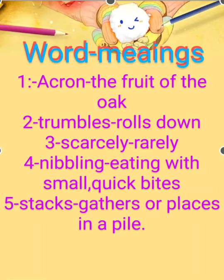First we will do some word meanings. First one is 'acorn' — the fruit of the oak. Second one is 'tumbles' — which means rolls down. Third one is 'scarcely' — which means rarely. Fourth one is 'nibbling' — means eating with small and quick bites. Fifth one is 'stacks' — gathers or places in a pile. These are the five word meanings which will be used in the poem.